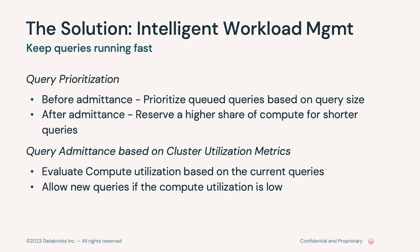The second pillar is query admittance based on cluster utilization metrics. This addresses the problem of over-packing large queries into too few clusters. We now look at actual cluster utilization — if two queries are already consuming the full cluster, the third query should trigger provisioning of a new cluster. We evaluate compute utilization based on current queries and allow new queries only if utilization is low. We should not run fewer queries than expected for small queries, nor too many for very large ones.